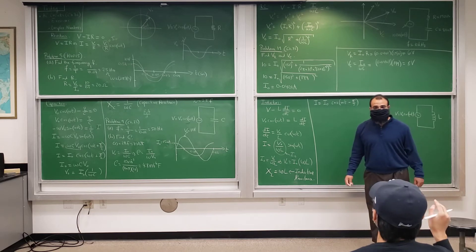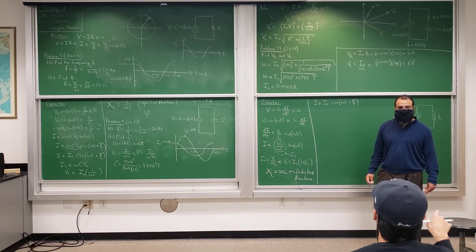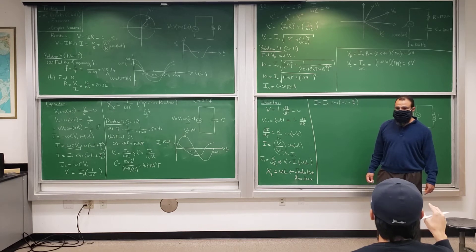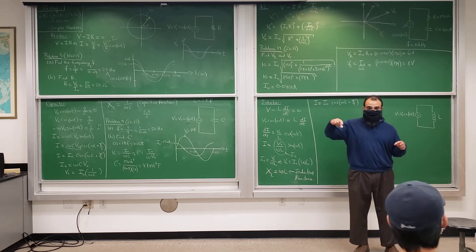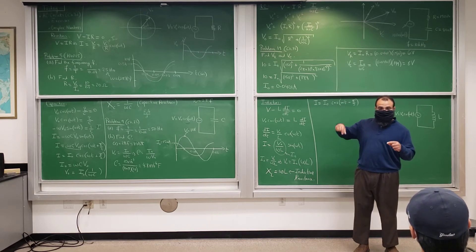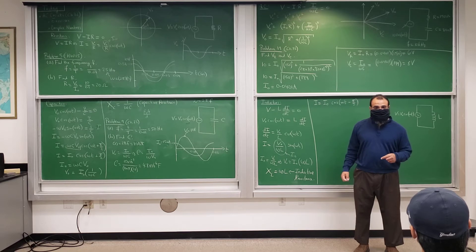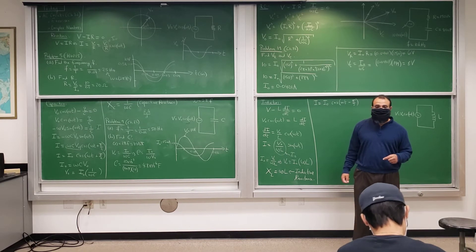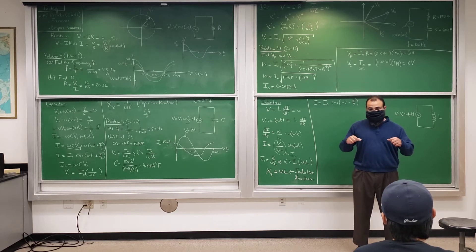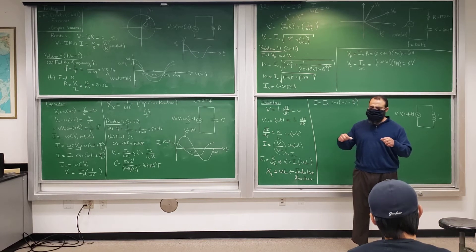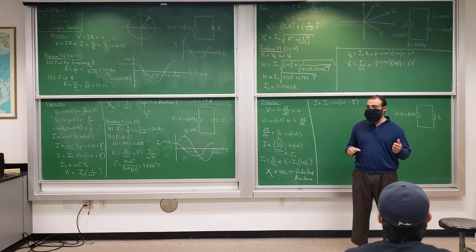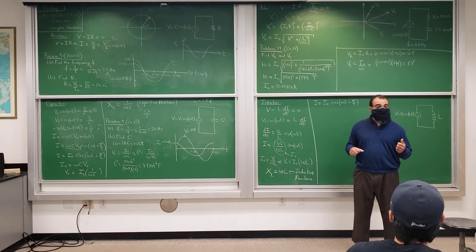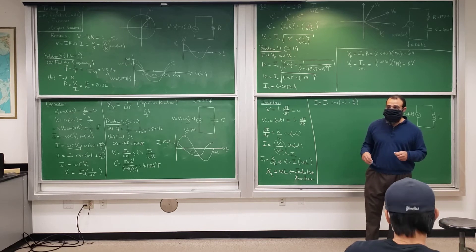This is opposite to the capacitor. For a resistor, voltage and current are in phase. For a capacitor, current is ahead by 90 degrees. For an inductor, current is behind by 90 degrees. Since the capacitor is ahead by 90 and the inductor is behind by 90, they make a 180 degree angle with each other.